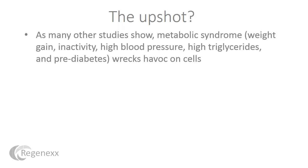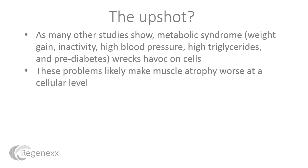The upshot is, as many other studies show, metabolic syndrome — which is weight gain, inactivity, high blood pressure, high triglycerides, and prediabetes — wreaks havoc on all of our cells and dramatically decreases our lifespan and our quality of life. In particular, it causes these problems and makes muscle atrophy much worse at a cellular level.